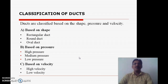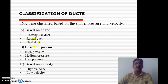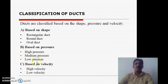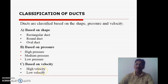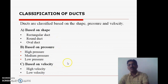There are different types of ducts generally used for air distribution systems. The classification of ducts is based on shape, pressure, and velocity. Based on shape: rectangular ducts, round ducts, and oval ducts. Based on pressure: high pressure duct, medium pressure duct, and low pressure duct. Based on velocity: high velocity and low velocity. When the velocity of air is higher than 10 meters per second, it is a high velocity duct. When the velocity is less than 10 meters per second, it is a low velocity duct.